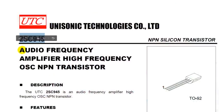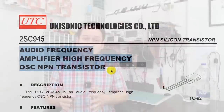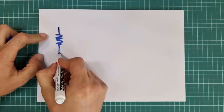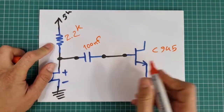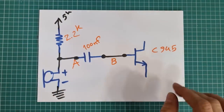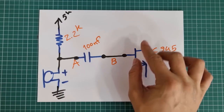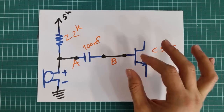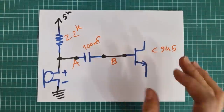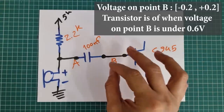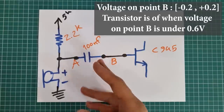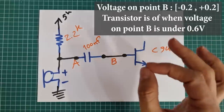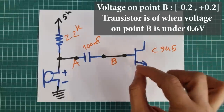To answer the second question, I have to draw a circuit diagram. The first thing you may think about is to connect point B to the base terminal of a transistor. It is somehow true, but it will not work at all because the whole signal here is under 0.6 volts — between 0.2 volts negative and 0.2 volts positive. The transistor is off when base voltage is under 0.6 volts.